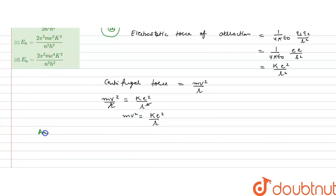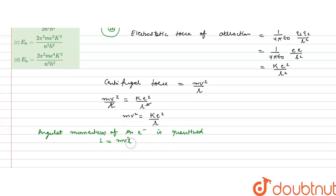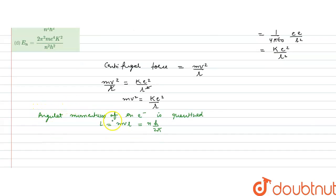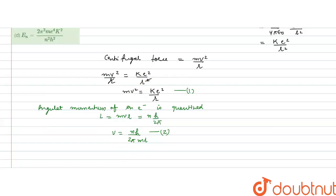The angular momentum of the electron is quantized. The angular momentum is L = mvr, and it is an integral multiple of h/2π. So we can write mvr = nh/2π. From here we can write the velocity: v = nh/(2πmr). Let us call this equation 2, and the force balance was equation 1.